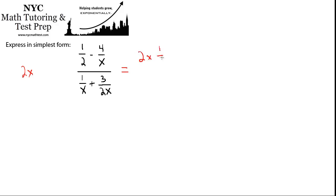but don't, because it's better to see the cancellations and stop yourself from making a simple mistake. So I'm going to do 2x times a half minus 2x times 4 over x, all over 2x times 1 over x plus 2x times 3 over 2x.